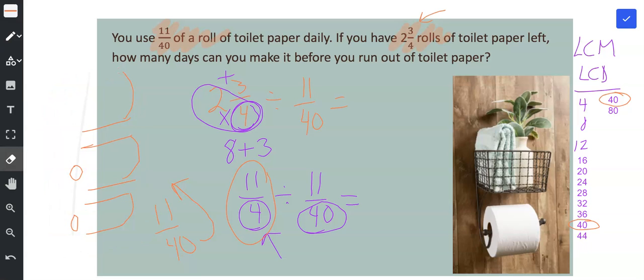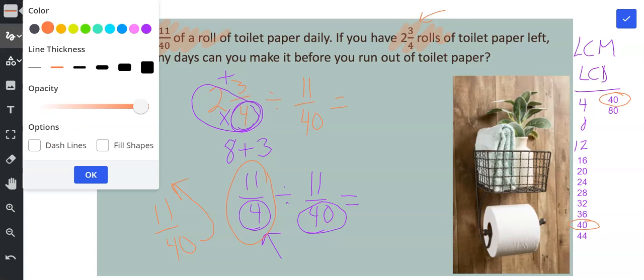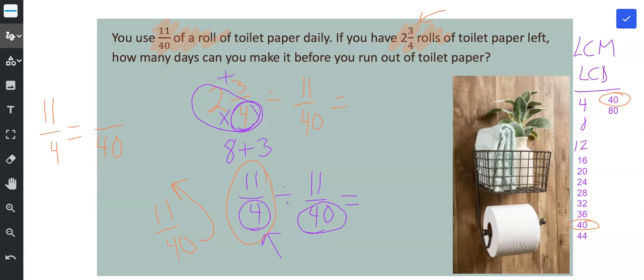So I need a little bit of room, so I'm going to erase my picture over here. And then I'm going to change 11/4 so that it has a denominator of 40. So I'm going to multiply 4 by 10 to get to 40. So I have to also multiply the numerator by 10, and I get 110/40. So I'm going to replace 11/4 with 110/40.